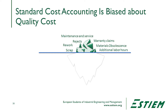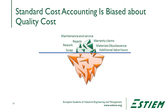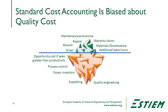Those items are just above the tip of the iceberg. Below it, our accounting systems don't tell us about opportunity costs if we could sell more but lack productivity, the cost of process control, excess inventory, expediting, quality engineering, customer impact, or supply chain costs. Cost is not a very good discriminant for whether we should take action — particularly standard costs provided by the finance organization.